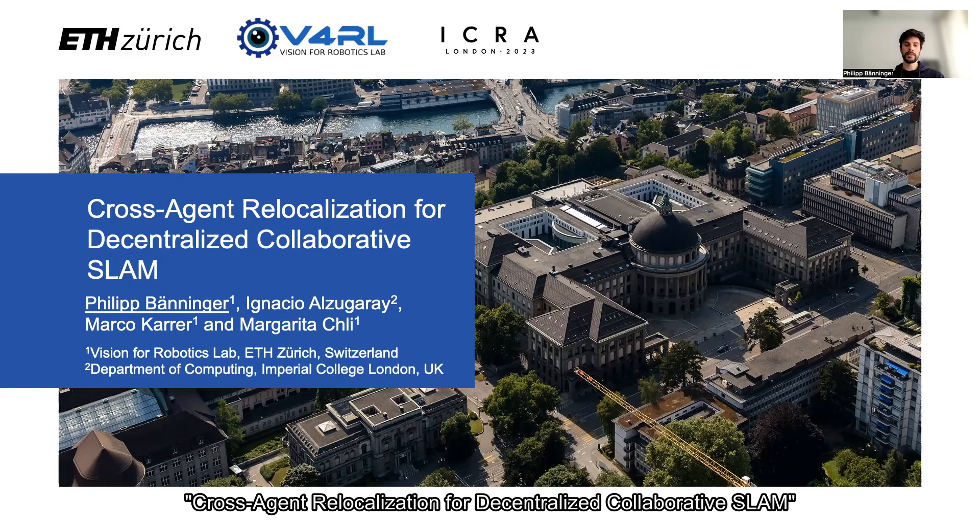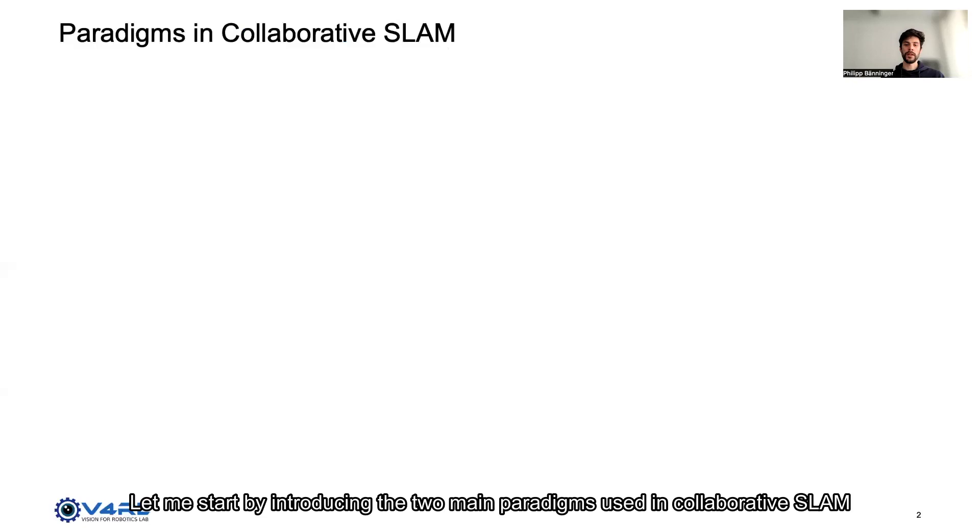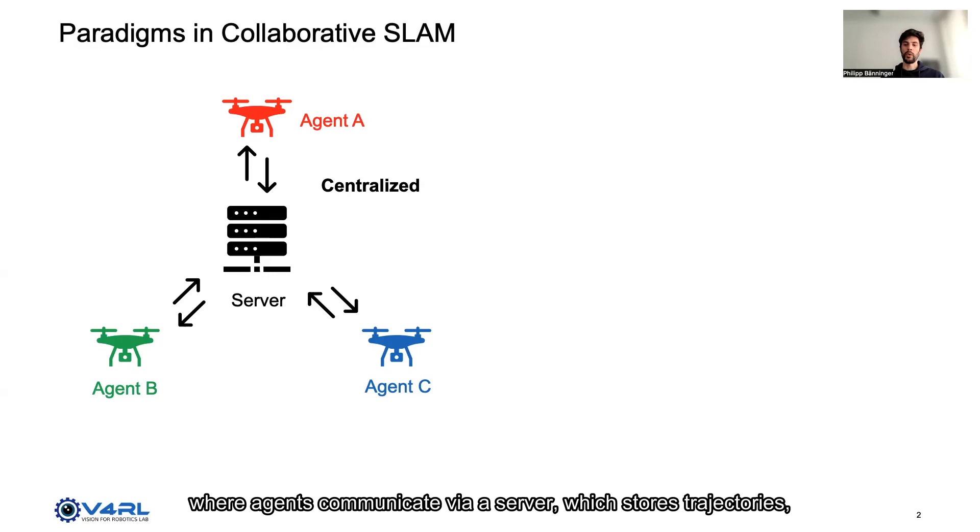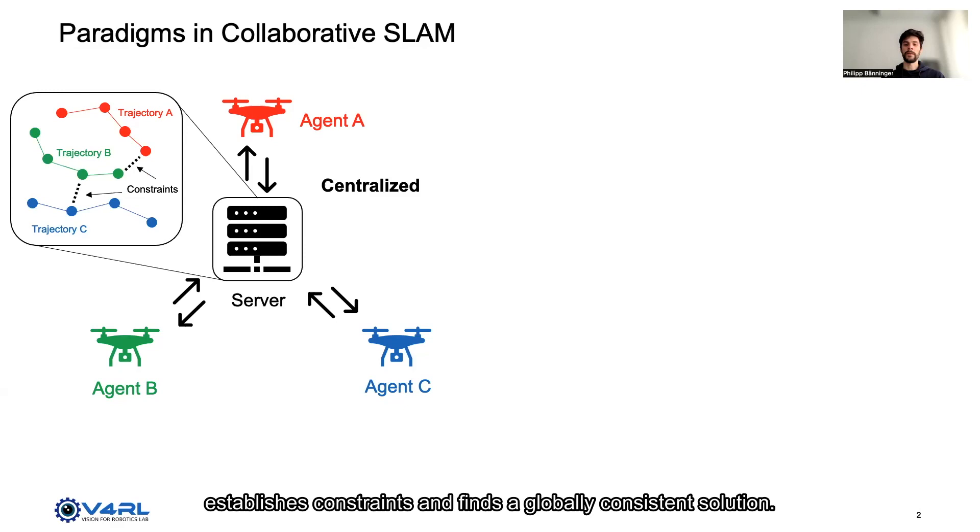Let me start by introducing the two main paradigms used in collaborative SLAM. On the one hand we have the centralized paradigm where agents communicate via a server which stores trajectories, establishes constraints, and finds a globally consistent solution.